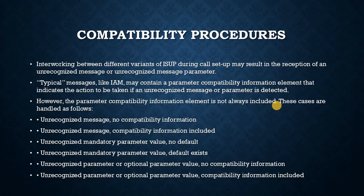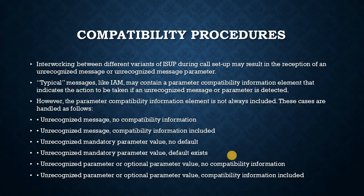Other signaling procedures — Compatibility procedures. Interworking between different variants of ISUP during call setup may result in the reception of an unrecognized message or unrecognized message parameter. Typical messages like IAM may contain a parameter compatibility information element that indicates the action to be taken if an unrecognized message or parameter is detected. However, the parameter compatibility information element is not always included. These cases are handled as follows: unrecognized message with no compatibility information; unrecognized message with compatibility information included; unrecognized mandatory parameter value with no default; unrecognized mandatory parameter value with default existing; and unrecognized parameter or optional parameter value with no compatibility information or with compatibility information included.